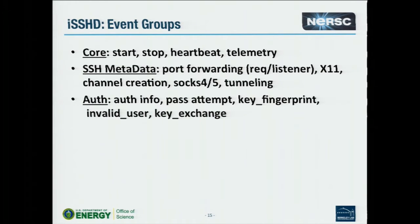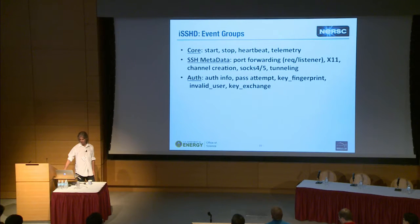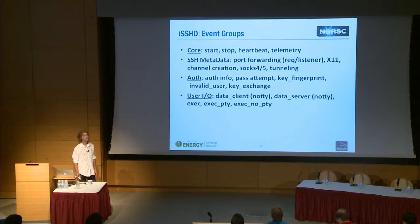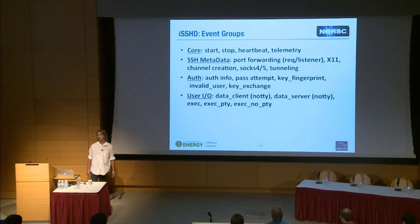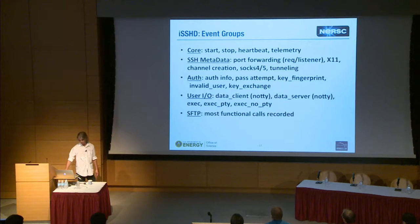You get authentication information — not only what worked, but if you're suitably motivated you can record passwords, or record hashes of passwords built so that if someone's doing a dictionary attack you can identify that, but you can't work backwards to the actual password. Other data includes key fingerprints, users, key exchange — handy for seeing if users are sharing passwords or keys. User IO: what the users are typing, executing, executing without terminals. SFTP: you can see what your users are moving back and forth.